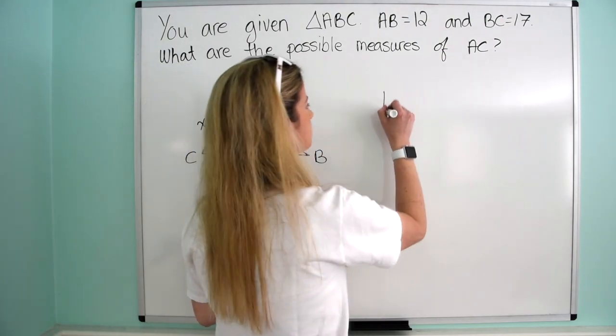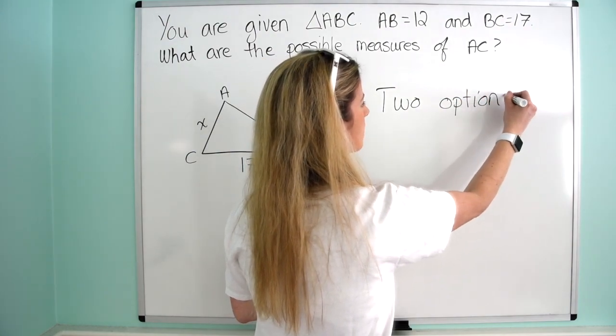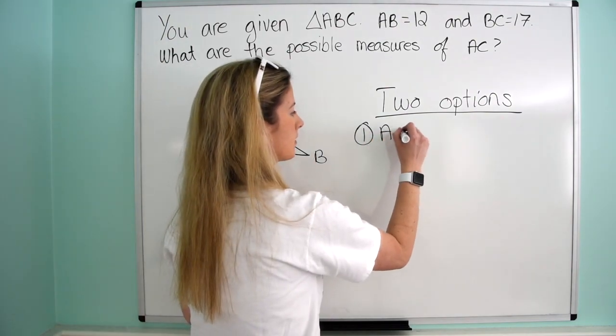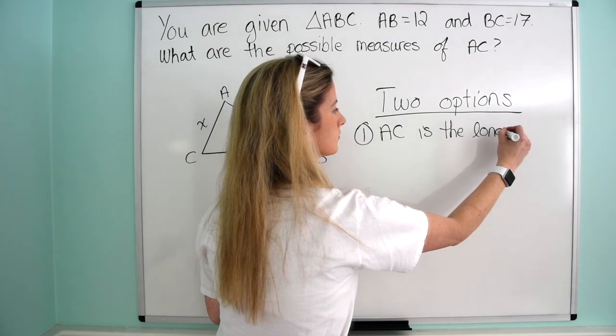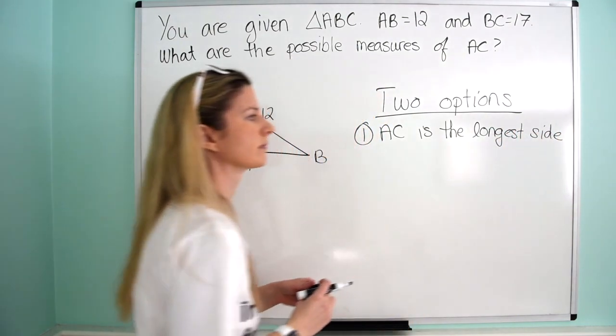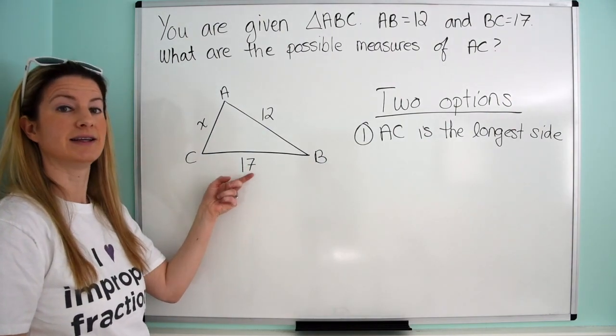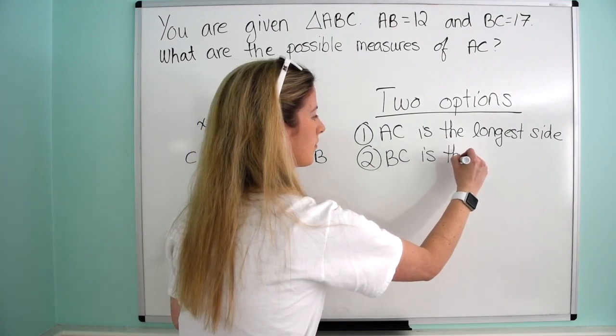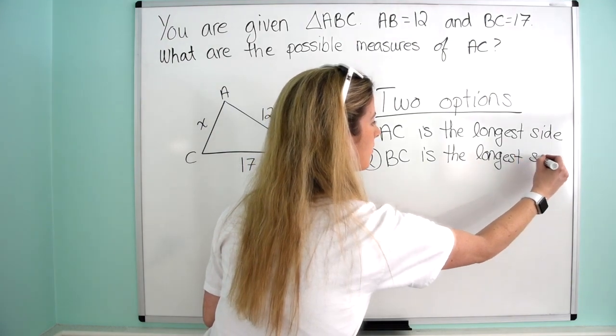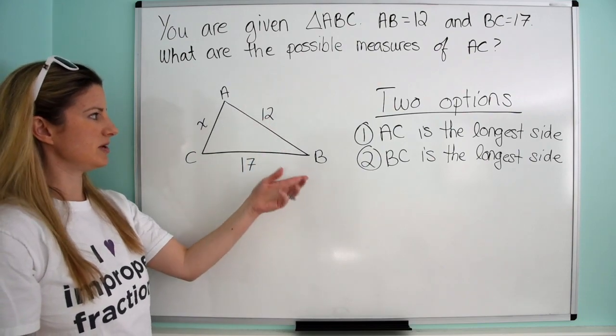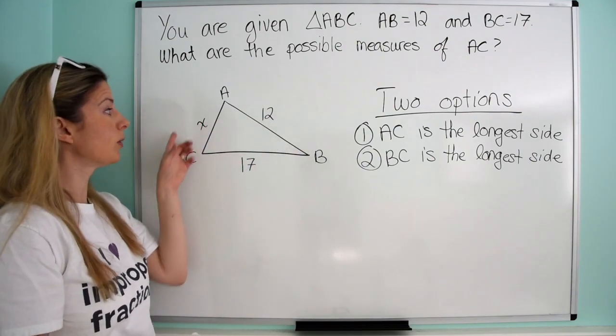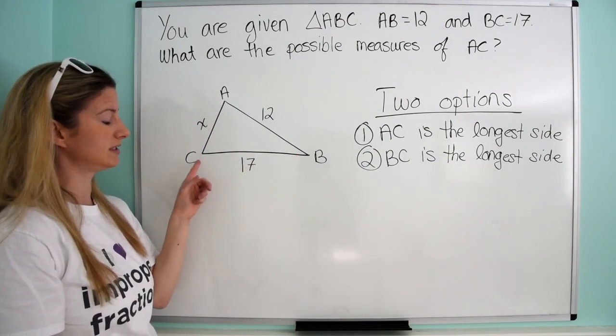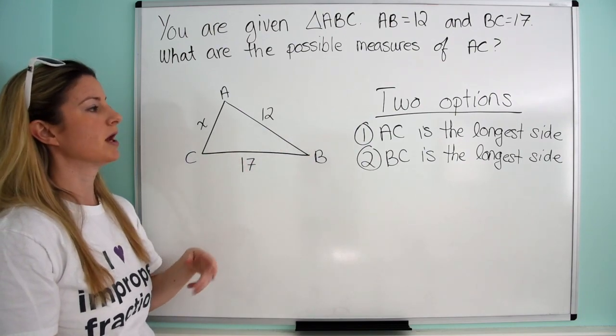We have two possible options here. Option one is that AC is the longest side. Option two is that BC is the longest side. Obviously we can't have AB be the longest side because 12 is less than 17. Since we don't know what X is, it could be the longest side, or BC could be the longest side. AB can't be the longest because BC is longer than it.